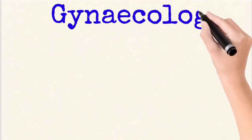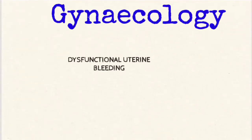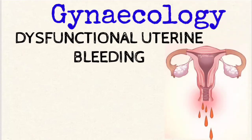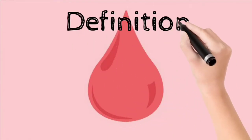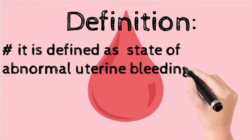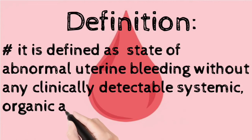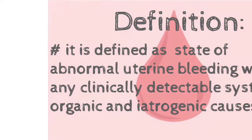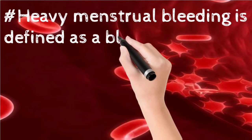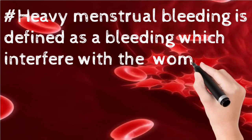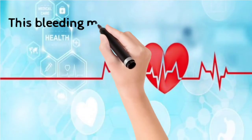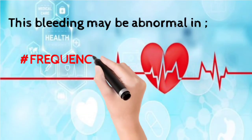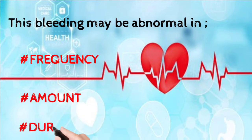Hello friends, today in gynecology we study dysfunctional uterine bleeding. This is an abnormal condition and it is also known as DUB. It is defined as the state of abnormal uterine bleeding without any clinically detectable systemic, organic, and iatrogenic causes. Heavy menstrual bleeding is defined as bleeding which interferes with the woman's physical, social, and material quality of life. This type of bleeding may be abnormal in frequency, amount, and duration.